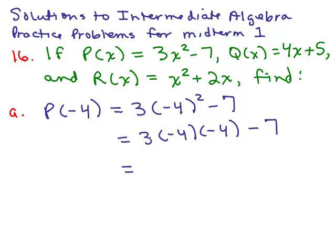So you could think of this as 3 times 16 or -12 times -4, it's going to be positive 48 minus 7, and 48 minus 7 is 41. So that's the answer.